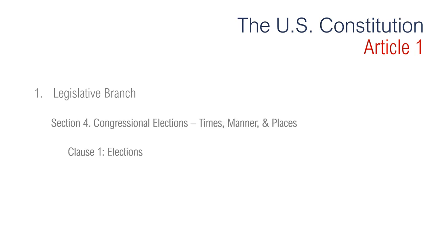Moving on, Section 4 is regarding congressional elections — the times, manner and places. Clause 1 says that Congress set the Tuesday after the first Monday in November in even-numbered years as the date for congressional elections. In states with more than one seat in the House, Congress requires that representatives be elected from districts within each state. Under the 17th Amendment, senators are elected at the same places as other officials.